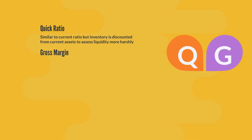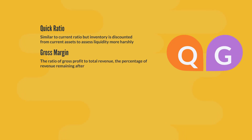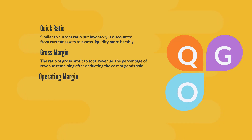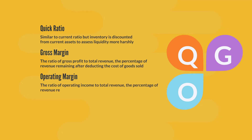Gross margin: the ratio of gross profits to total revenue — the percentage of revenue remaining after deducting the cost of goods sold. Operating margin: the ratio of operating income to total revenue — the percentage of revenue remaining after deducting all operating expenses.